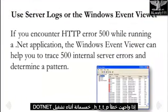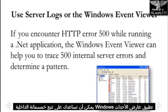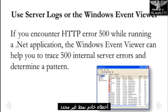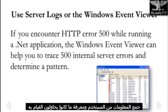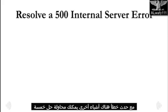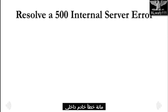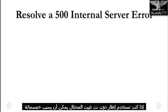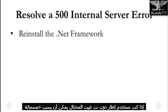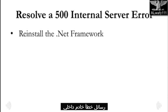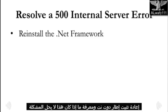If you encounter HTTP Error 500 while running a .NET application, the Windows Event Viewer can help you trace 500 internal server errors and determine a pattern. If the server logs are not clear, gather information from the user and find out what they were trying to do when the error occurred. There are other things you can try to resolve a 500 internal server error. If you're using the .NET framework, a corrupt install can cause 500 internal server error messages. Reinstall the .NET framework and see if this solves the problem.